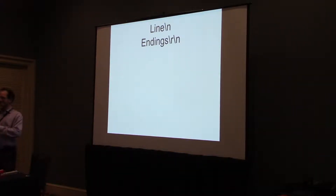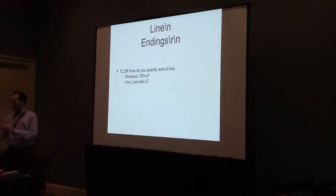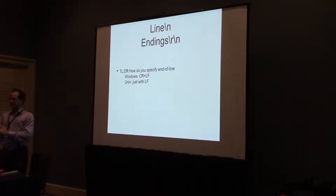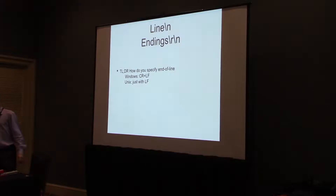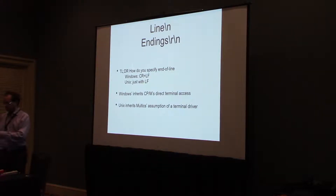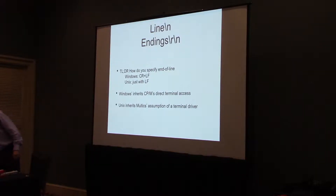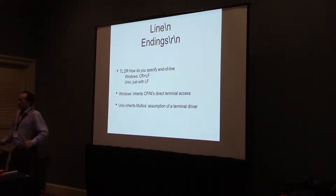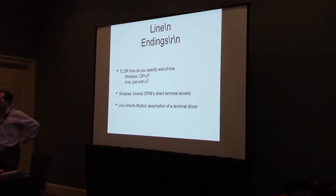Line endings. This is a personal favourite. On Windows, a text file's lines end with a carriage return and a line feed. On Unix they end with just a line feed. The reason has to do with the heritage of the operating systems — Windows is based on CP/M, a very small operating system that preceded DOS. Because it was very small, it assumed direct access to the terminal, and so for the teleprinter required both characters to ensure the teleprinter was at the start of the line before moving to a new line.